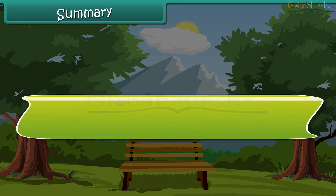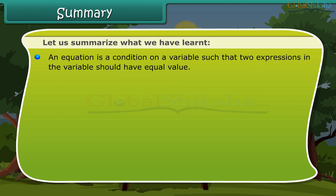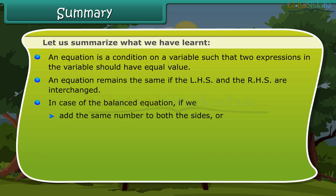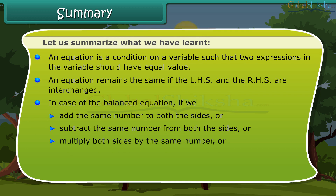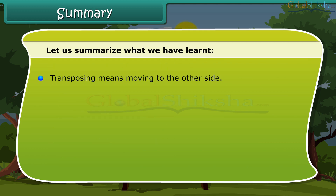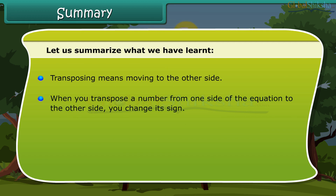Summary. An equation is a condition on a variable such that two expressions in the variable should have equal value. An equation remains the same if the LHS and RHS are interchanged. In a balanced equation, if we add, subtract, multiply, or divide both sides by the same number, the balance remains undisturbed — that is, the LHS remains equal to the RHS. Transposing means moving to the other side; when you transpose a number, you change its sign.